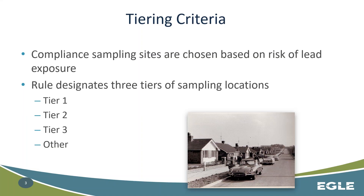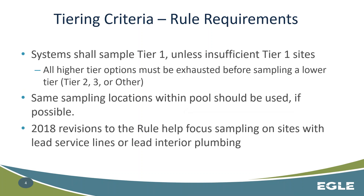In general, the rule sets up tiering criteria where all sites are determined to be Tier 1, Tier 2, Tier 3, or Other, and where you should be sampling for compliance is based on the risk of lead-containing materials and lead exposure. All systems should be sampling Tier 1 sites unless they don't have Tier 1 sites, and then they must exhaust all higher tier options before moving to a lower tier like Tier 2, 3, or Other. If possible, you should be using the same sampling locations over and over to reduce variability.